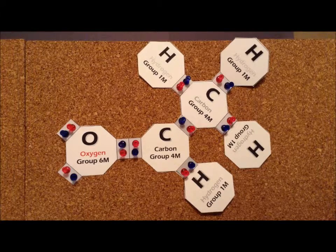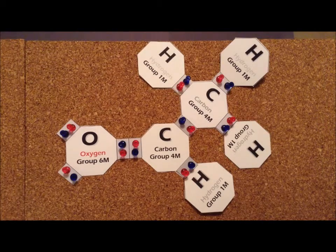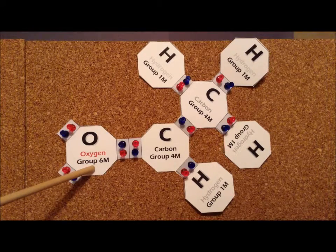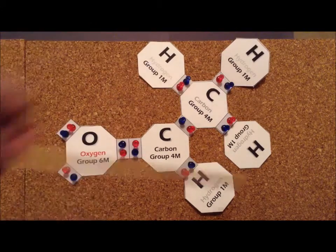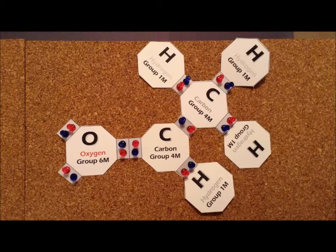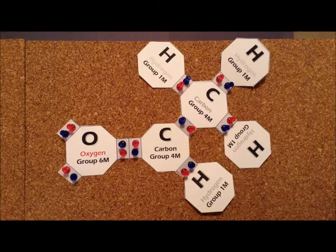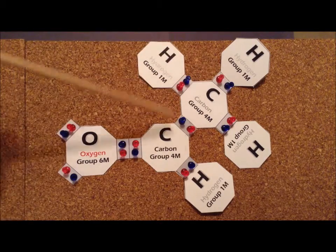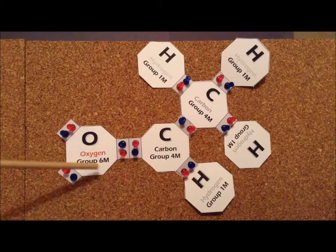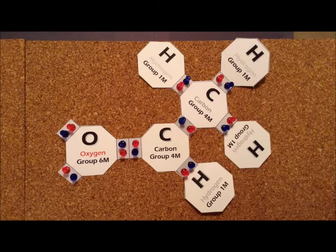To form the Lewis structure for this compound, we note that we have two carbon atoms, each of which contributes four electrons, so that gives us eight, six more from oxygen, plus four from the four hydrogens, which gives us a total of 18 electrons. To satisfy the duet rules for the hydrogens and the octet rule for the carbons, we need to allocate the electrons as we've shown here, still keeping the C double bond O for the carbonyl group. That's a requirement for any compound that is an aldehyde.